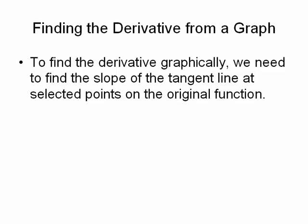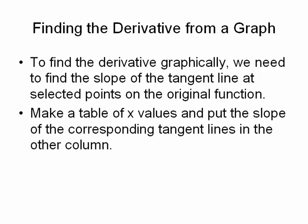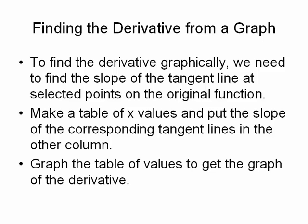In previous sections, we've used the definition of a derivative to take a formula and come up with a formula for the derivative. But in this section, we're going to be looking at graphs and slopes of tangent lines to help us figure out what the graph of the derivative is. To find the derivative graphically, we need to find the slope of the tangent line at selected points on the original function. We'll make a table of x values and put the slope corresponding to those tangent lines in the other column. Then we'll graph that table of values to get a graph of the derivative.